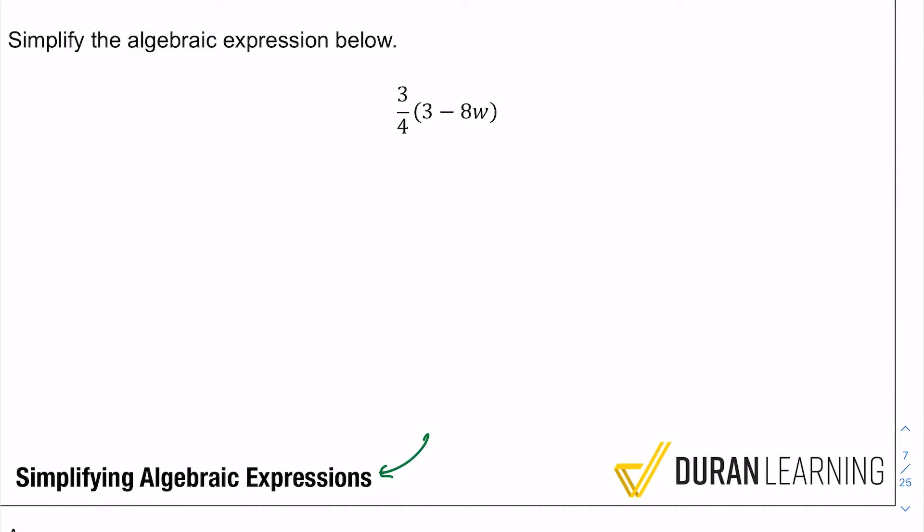So this is distributive property at first because we have to make sure that the three quarters multiplies with the three and we got to make sure it multiplies with the negative eight w. Remember distributive property, everything outside of the parentheses that's being multiplied, it has to multiply with everything on the inside.